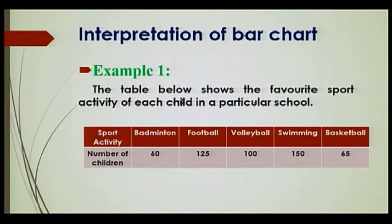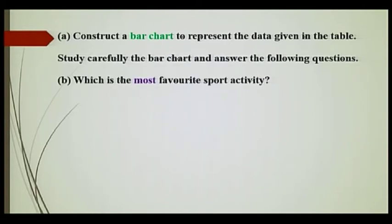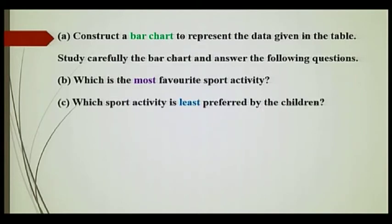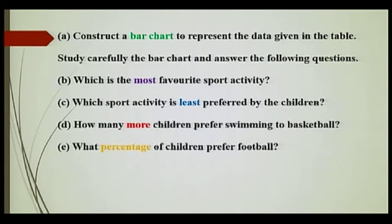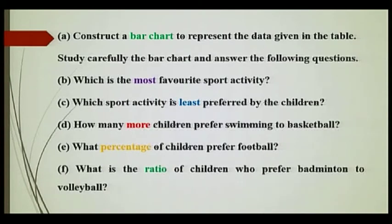You've got, for example, badminton: 60 children; football: 125; volleyball: 100; swimming: 150; and basketball: 65. You have to construct a bar chart to represent the data given in the table. Then study carefully the bar chart and answer the following questions: Which is the most favorite sport activity? Which sport activity is least preferred by the children? How many more children prefer swimming to basketball? What percentage of children prefer football? And what is the ratio of children who prefer badminton to volleyball?